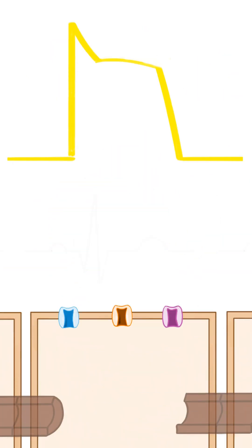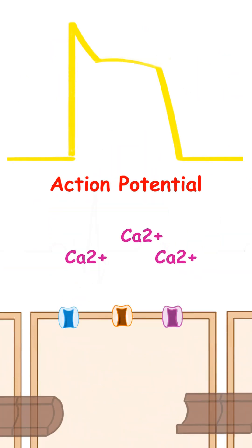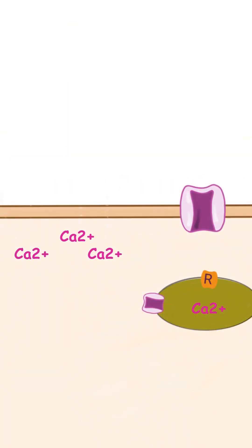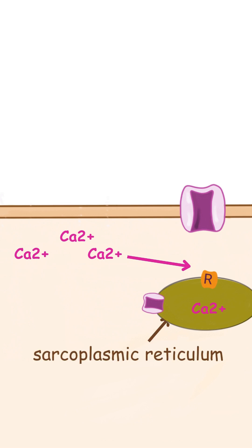As the result of the generated action potential, calcium ions enter the cell. When the calcium ions enter the cell, they attach on receptors within the cell located on the sarcoplasmic reticulum, initiating more calcium ions to be released from the sarcoplasmic reticulum.